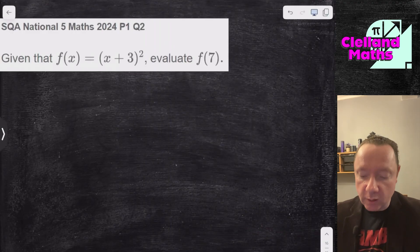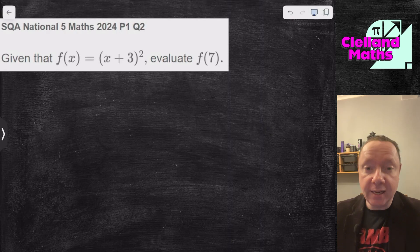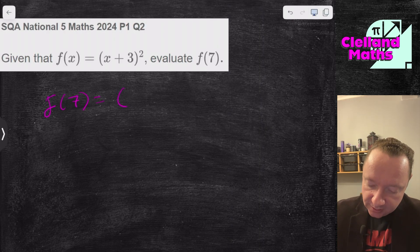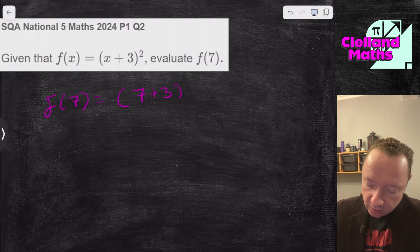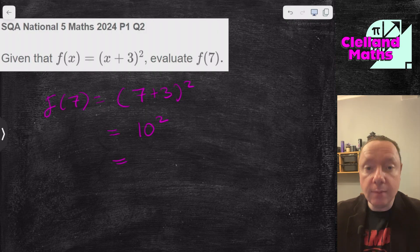SQA National 5 Maths 2024 Paper 1 Question 2 on functions. f of x equals x plus 3 all squared. Find f of 7. So x is 7. So that's 7 plus 3 still squared. That's 10 squared. 10 times 10 is 100. And we're done there.